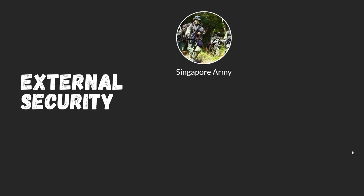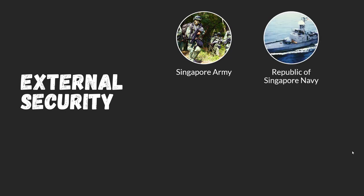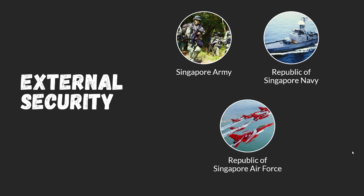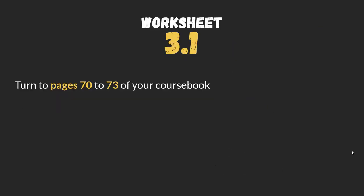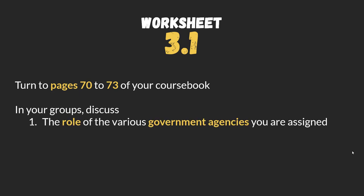For external security, the three main forces are the Singapore Army, which is the land force; the Republic of Singapore Navy, taking care of the sea; and the Republic of Singapore Air Force, taking care of the air. We will look at the course book to discuss the roles of these various government agencies, because some of you may not even know about them — it's important to find out what they stand for and how they contribute to Singapore's safety.